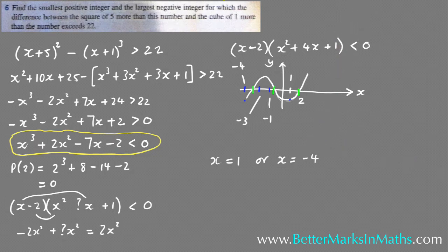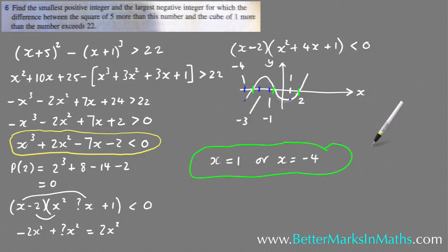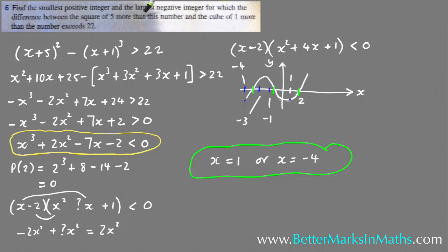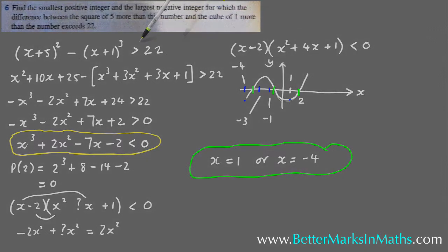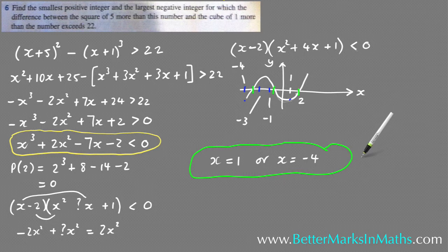So the two correct answers are x = 1 (the smallest positive integer) and x = -4 (the largest negative integer). This is quite a tricky question. With worded questions, make sure you read them carefully — as many times as you need — to find how to set up the equations, because that's usually the hardest part. Work carefully through phrases like '5 more than this number' and 'the square of that' to build the inequality correctly.